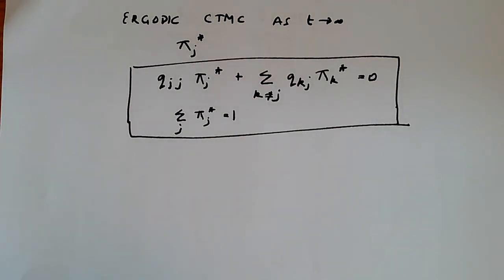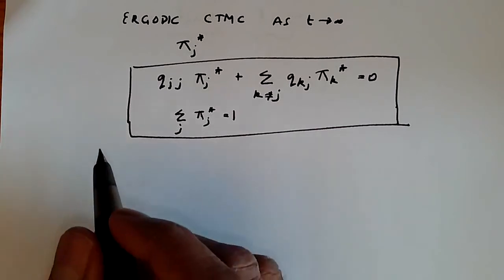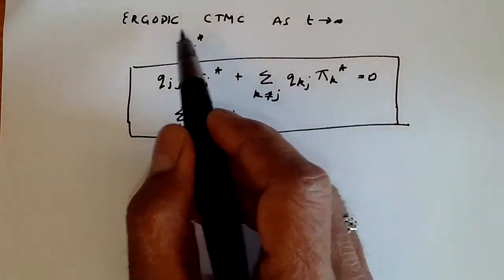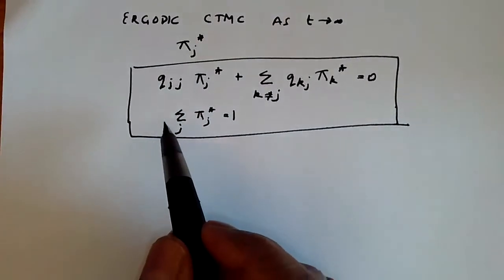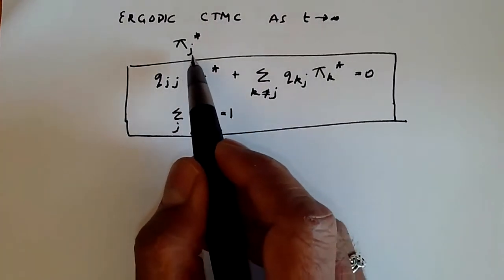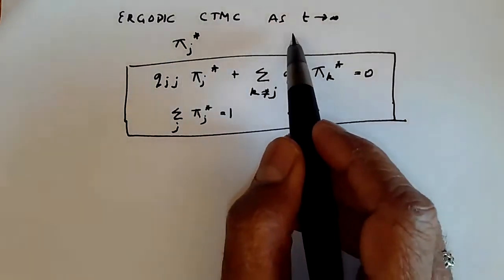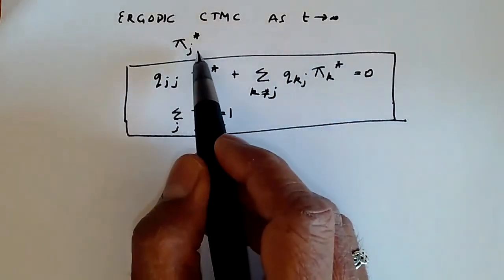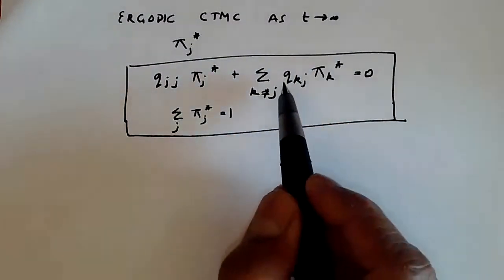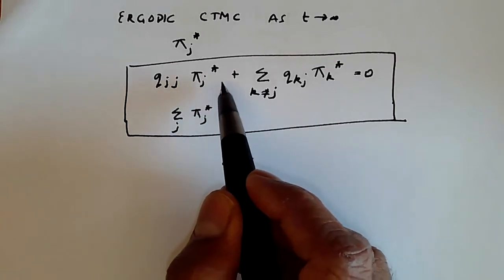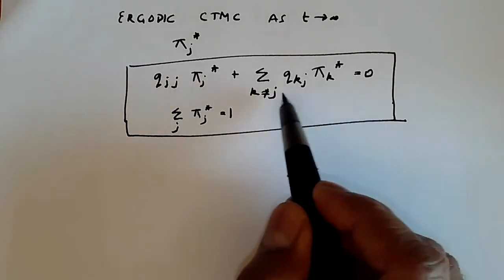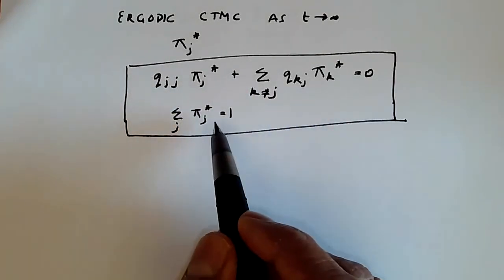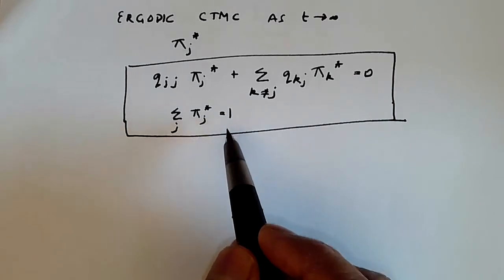Now let's try to find the stationary probability distribution of a birth and death process. Remember that if a continuous time Markov chain is ergodic, then the probability of being in state j as t tends to infinity is given by π_j*, where q_jj * π_j* plus this summation equals 0, and all the π_j* sum up to 1.